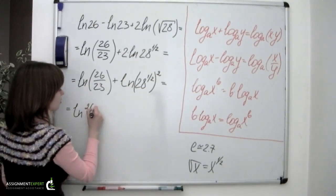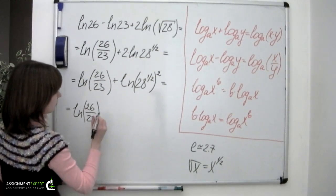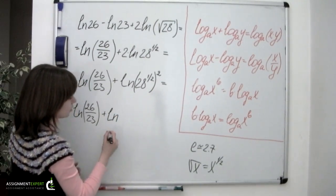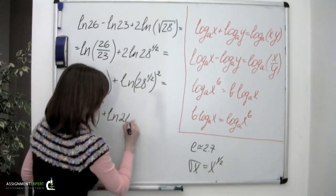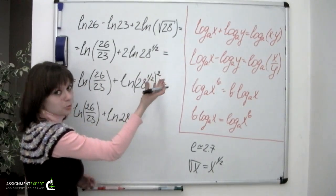We still have this first logarithm. And the second one turns out to be simply ln of 28. Because 1 half times 2 equals 1.